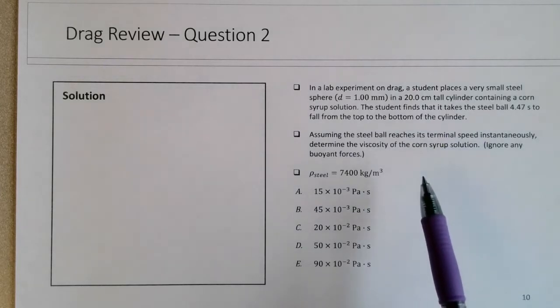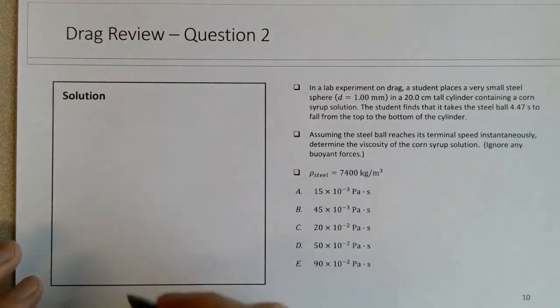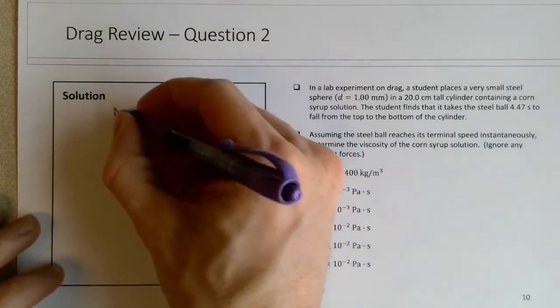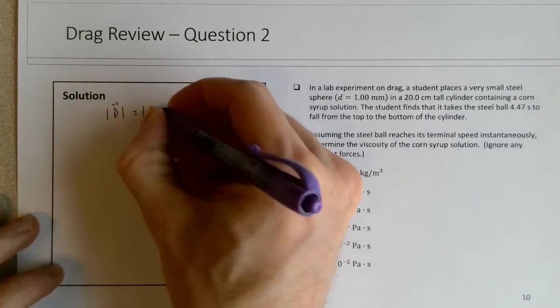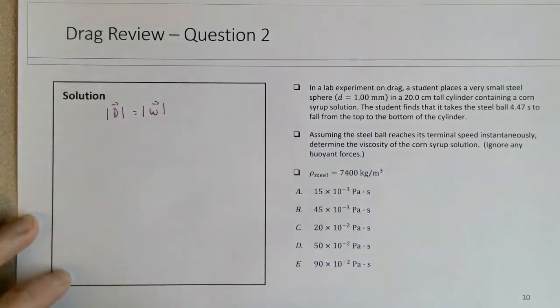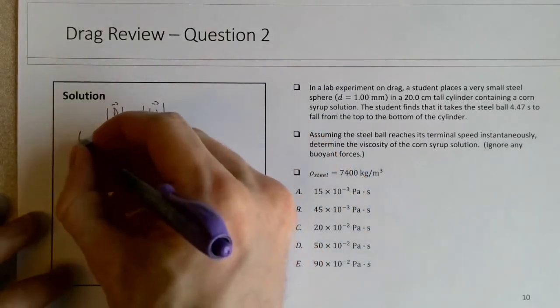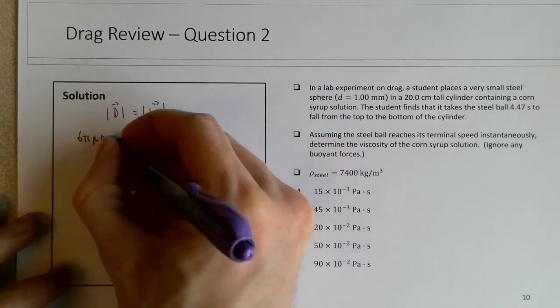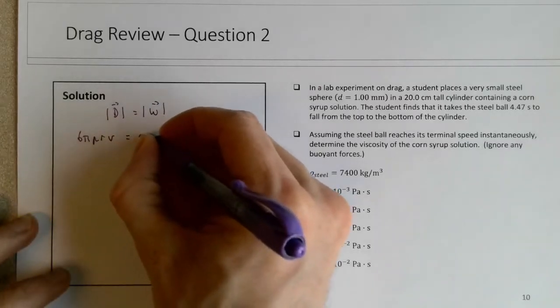So we can set the drag force equal to the weight force. Like the last question, question one, but this time the drag equation needs to be for low Reynolds number. So again, I would set the drag magnitude equal to the weight magnitude, but in this case the drag force is 6πηrv, and this is equal to mg.